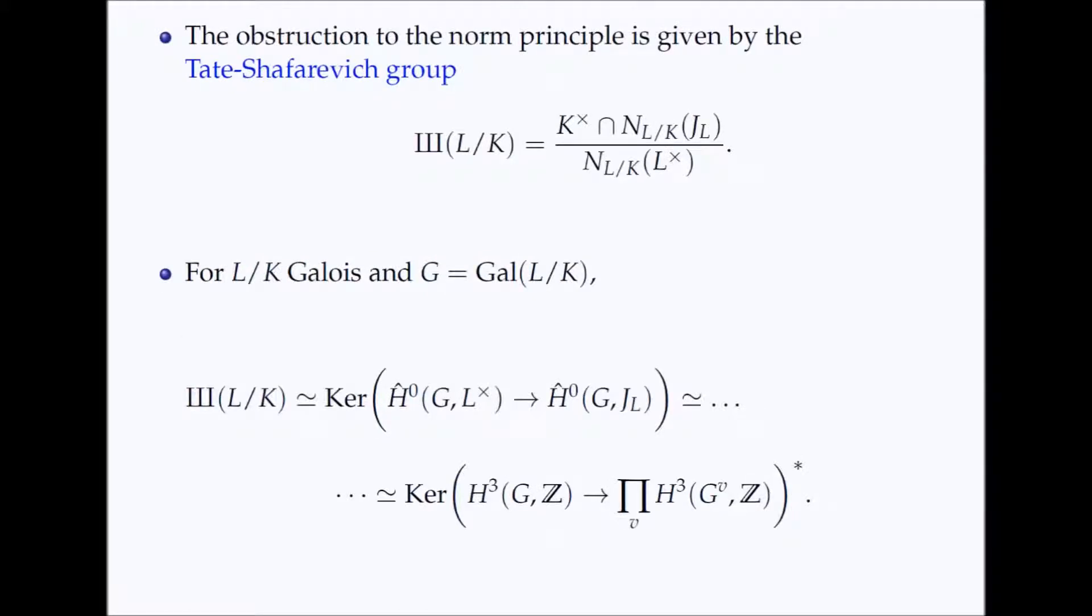Our argument uses the Tate-Shafarevich group, which gives the obstruction to the norm principle. There is a nice cohomological description of the Tate-Shafarevich group in the case where L over K is a Galois extension, which is obtained by applying a series of isomorphisms from group cohomology and class field theory.